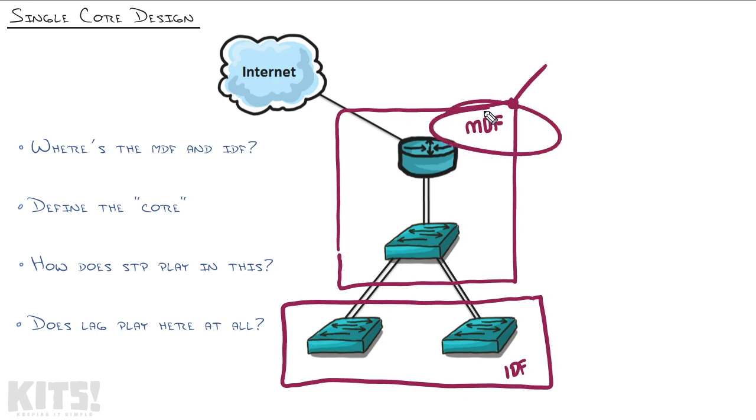So usually the MDF is the room that holds most of your servers. It's the room where the internet connection usually comes in. It's usually the room most central to your facility. In the case of the building that we're working with, the MDF will be that messy room that I just showed you. That's not the biggest room, but it's the most central room and it's where all the internet connectivity comes into place. So that will be where we design our core switch.